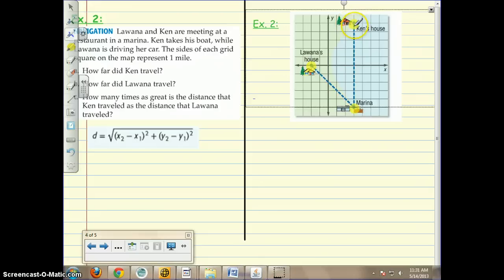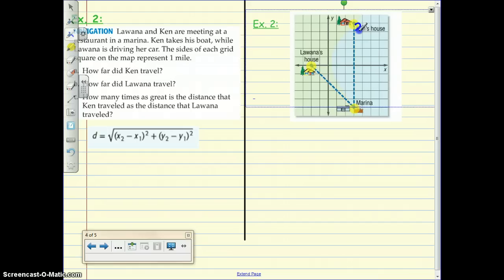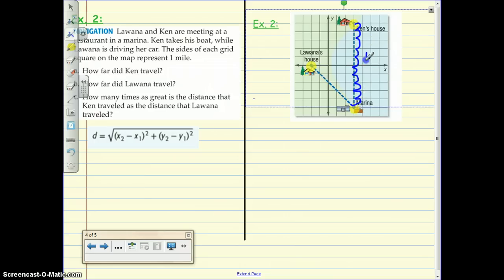How far did Ken travel? Well, the cool thing about where Ken is going is it's straight up and down. So we don't even have to use the distance formula. We can just count. 3, 4, 5, 6, 7, 8, 9, 10. So that distance is 10 miles.